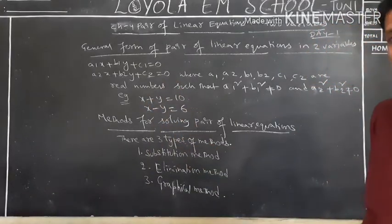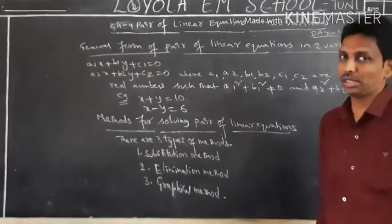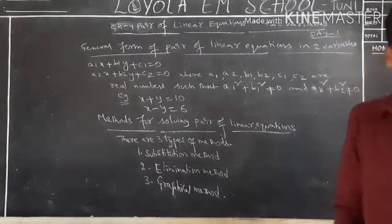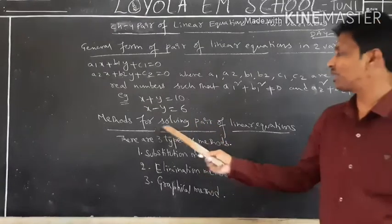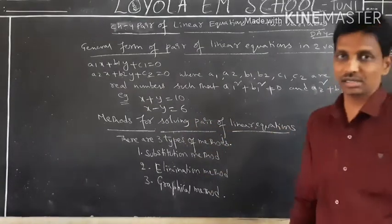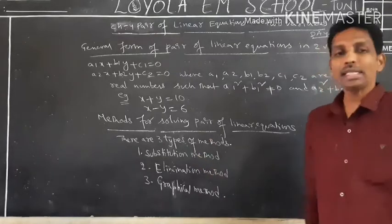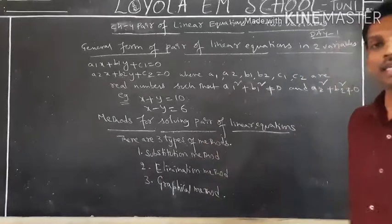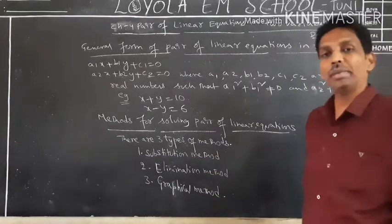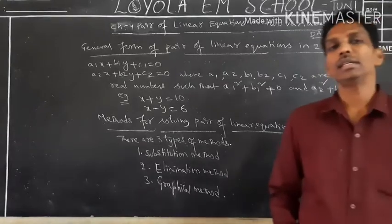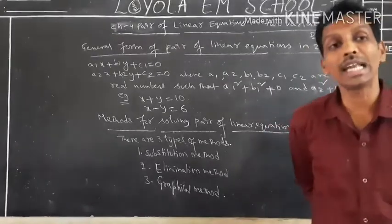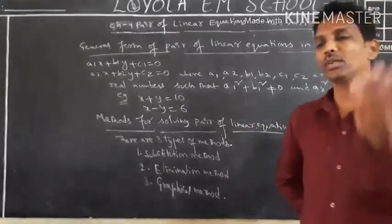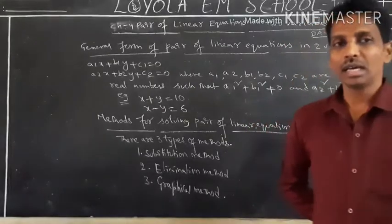An example of a pair of linear equations: x + y = 10 and x − y = 6. We might have solved such questions in previous classes. There are three types of methods to solve a pair of linear equations: the substitution method, the elimination method, and the graphical method.